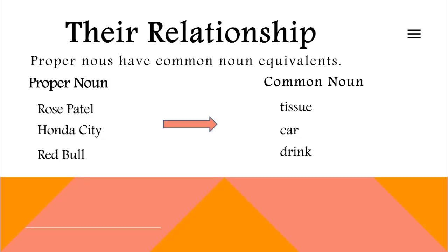Do you know that all proper nouns have common noun equivalents? For example, Rose Petal is a proper noun and its common noun equivalent is the word 'tissue.' Similarly, Red Bull is the name of an energy drink and its common noun equivalent is the word 'drink.' However, not every common noun has a proper noun equivalent — for example, the words 'hand,' 'dirt,' and 'space' have no proper noun equivalents.